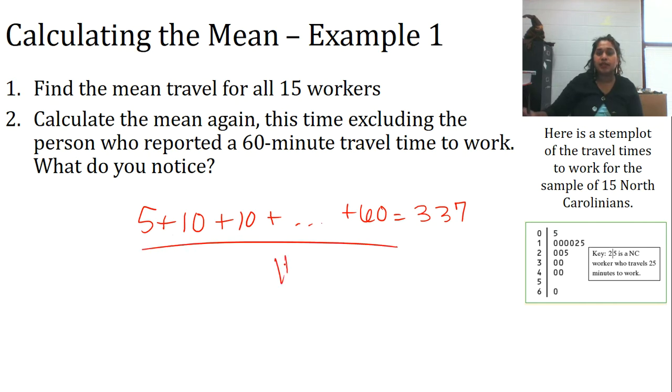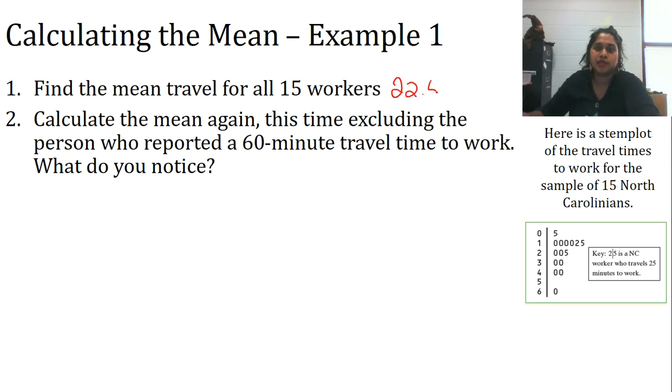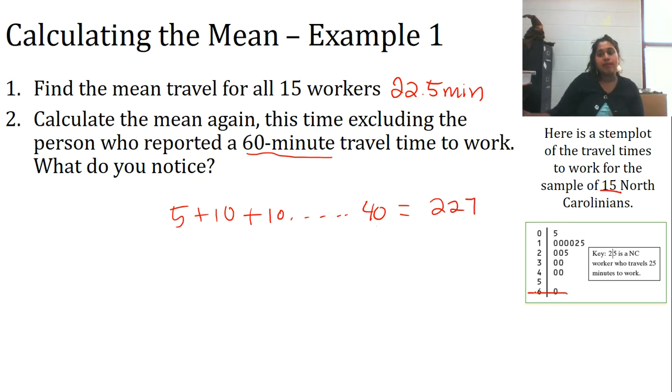I've already done this calculation, so I know that it's 337. But we have to divide by the actual n value. And in this case, it's 15 North Carolinians. So 337 divided by 15 becomes 22.5. And I cannot forget my units, minutes. So this was for number one. But what happens if we take out that one random person who said that it takes them 60 minutes to get to work every day, an hour? We do it again. We add 5 and 10 and 10 and all the way, but this time I'm going to stop at 40. I don't need that 60 value. So we end up with 227.